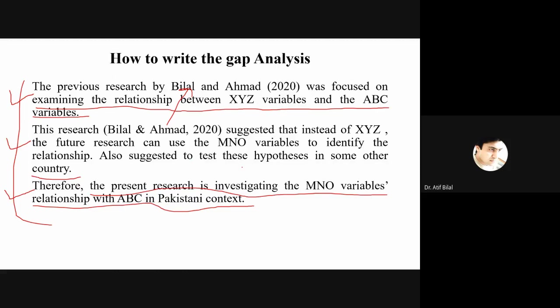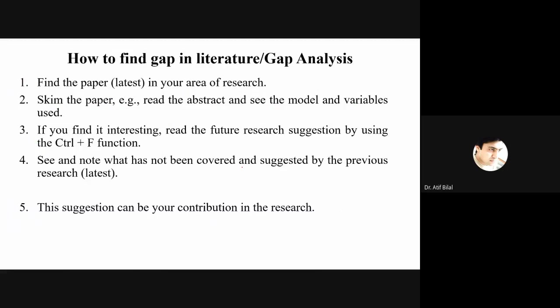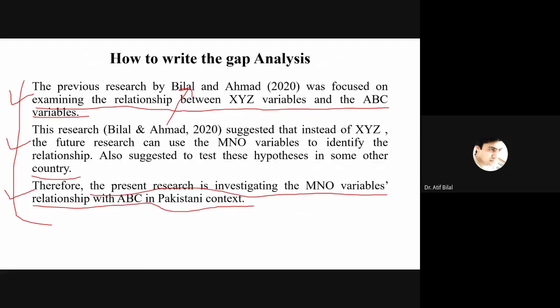Now, the last thing is how many papers should be used to write our gap analysis? Initially, one to two papers, one should be a latest one and then the other can be a little older can be used. One, two, or three papers are enough at your bachelor's level. But when you go to MS and PhD level, then a lot of rigor is required, which means you have to find the gap from multiple papers and from latest as well as previous studies. So this is all about how to find the gap in literature and doing the gap analysis, and then what to write and how to write the gap analysis.